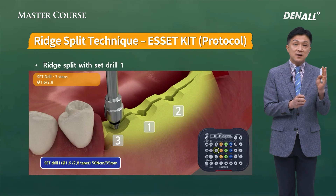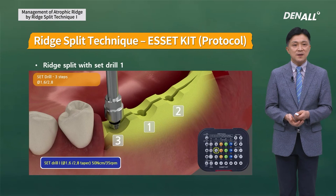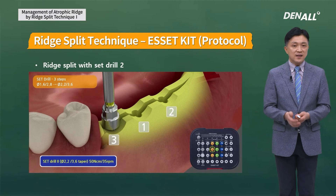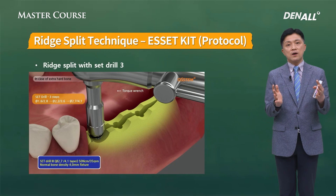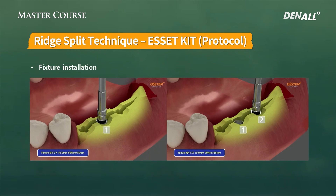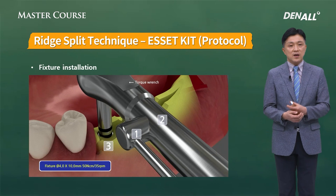Bone always rebounds. Therefore, in the proximal area, after using the set drill for the split, leave the set drill in place and move to the center point to minimize the rebound effect. Always follow the order: center, distal, then proximal. From set drill 3 onward, the amount of split and torque increase significantly — always approach using your hand. The final implant placement position should be determined using a hand wrench.